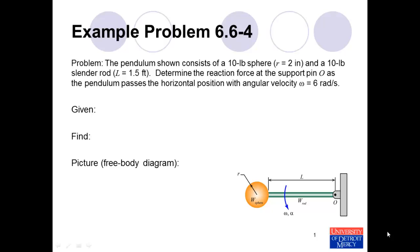Looking at the problem, we can identify some of the given information. We're told that the sphere has a weight of 10 pounds and the rod has a weight of 10 pounds. We're given information about the dimensions, and we want to find information when the angular velocity is 6 radians per second at the instant it passes the horizontal position as shown. Ultimately, what we want to find is the reaction force at the support pin O.